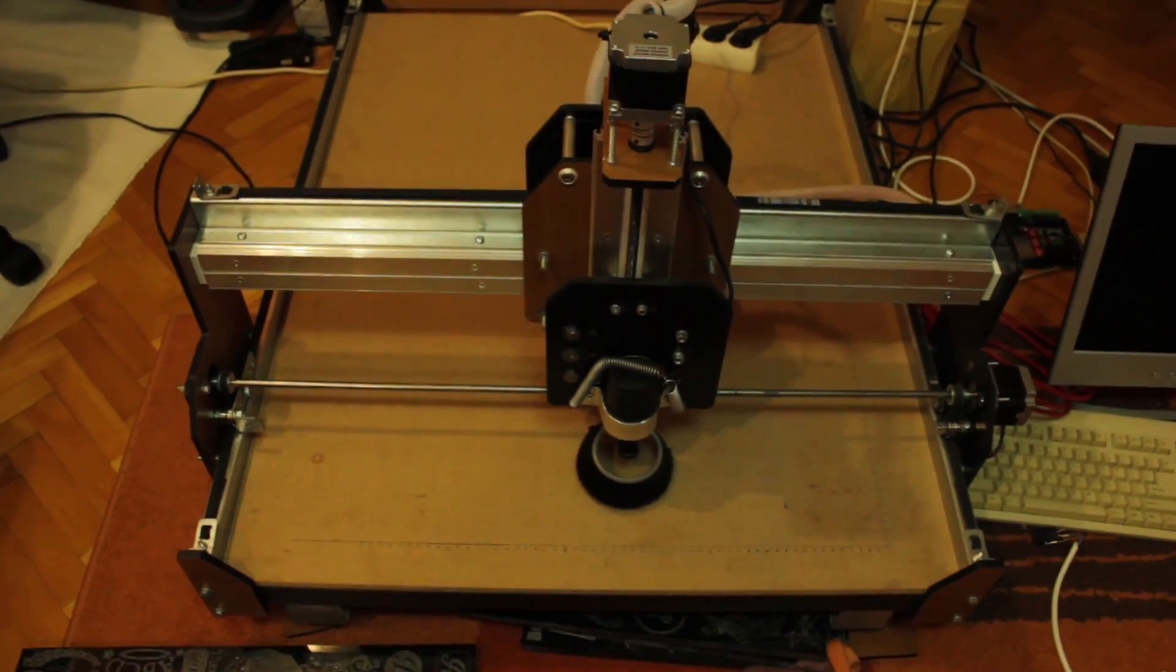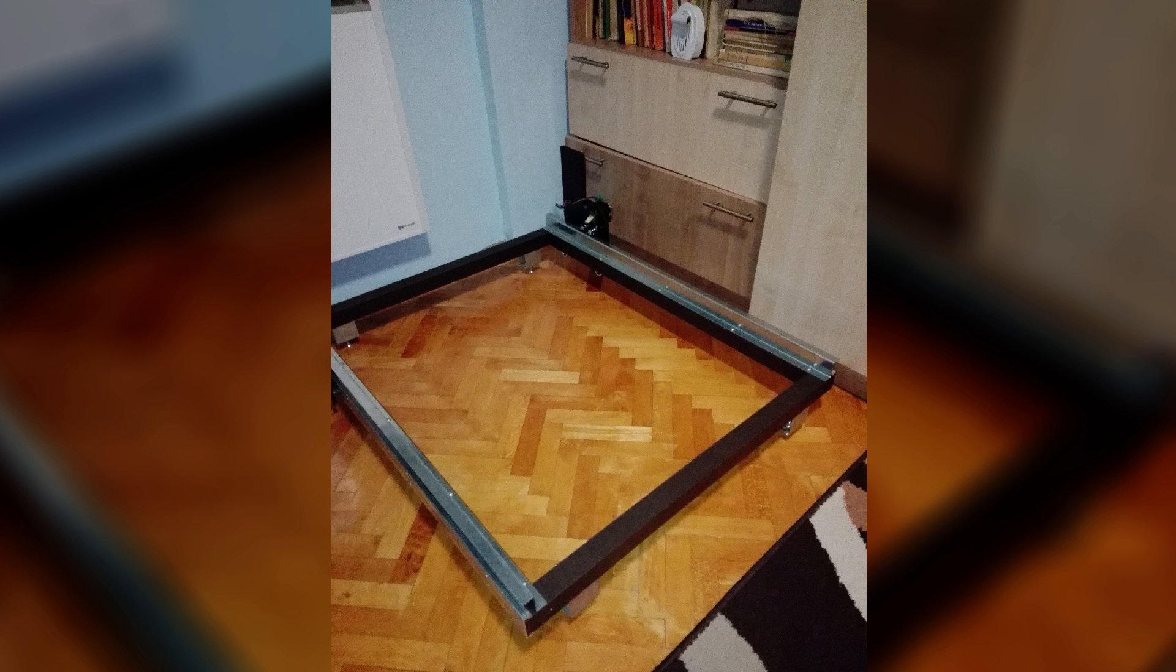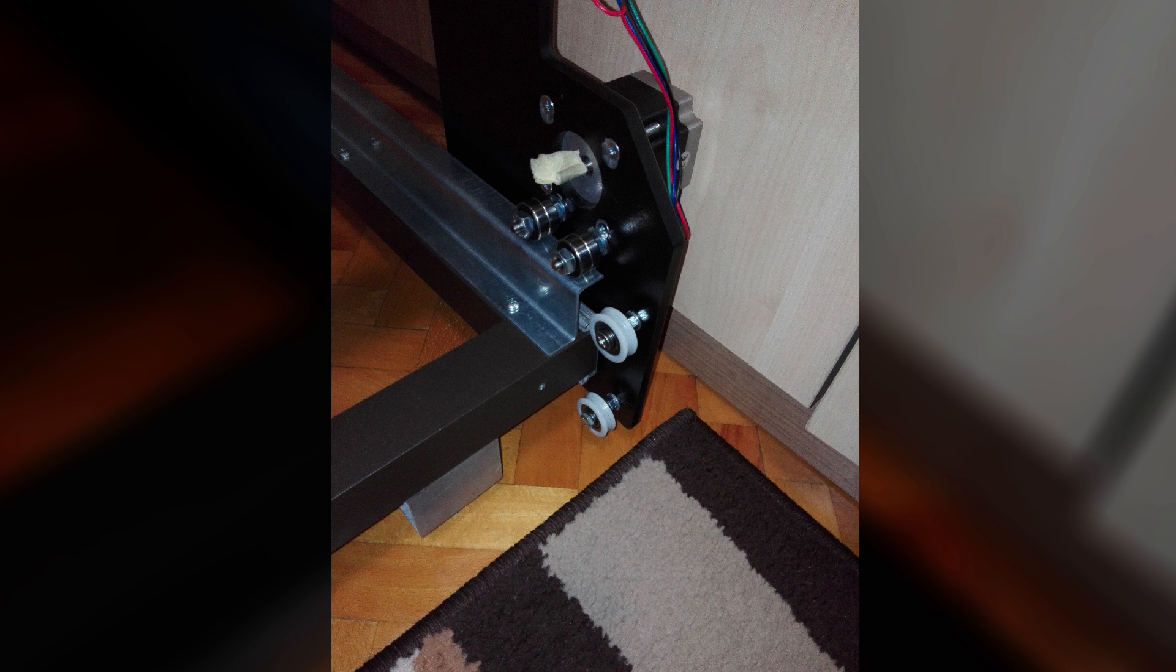The main use for this machine will be engraving, but it can be used for milling too depending on what it's equipped with. The frame is made out of aluminum and the pieces that hold the Y and Z axis are made out of plastic.